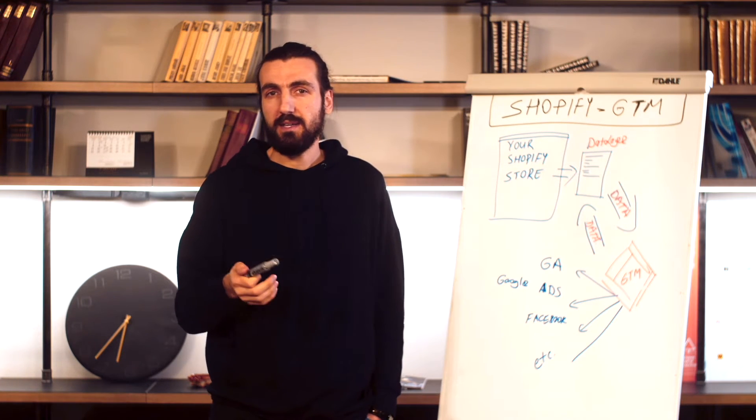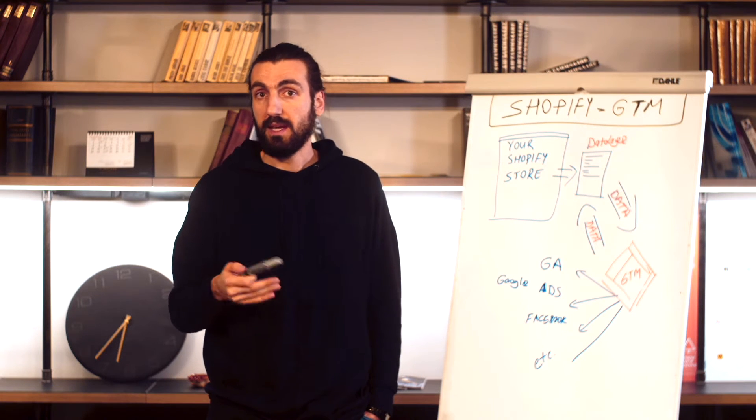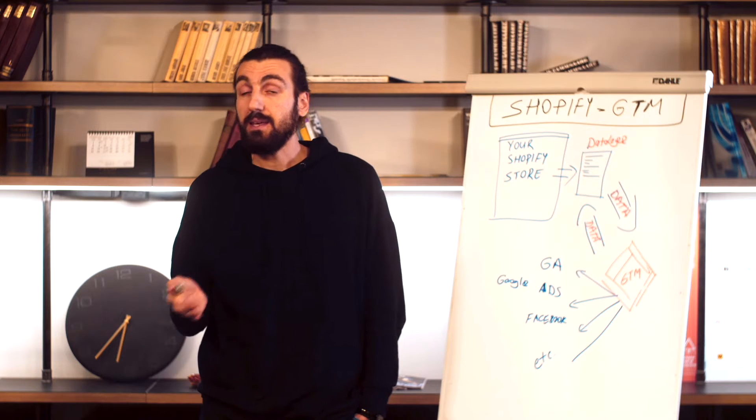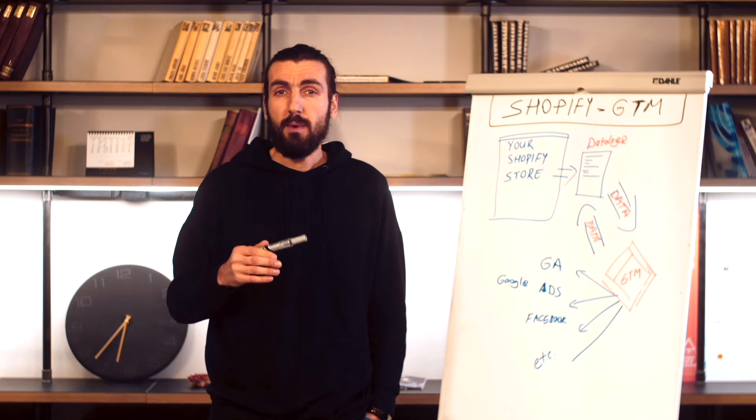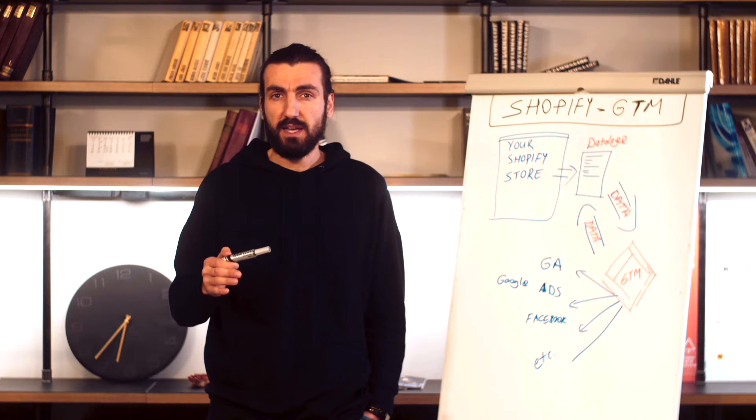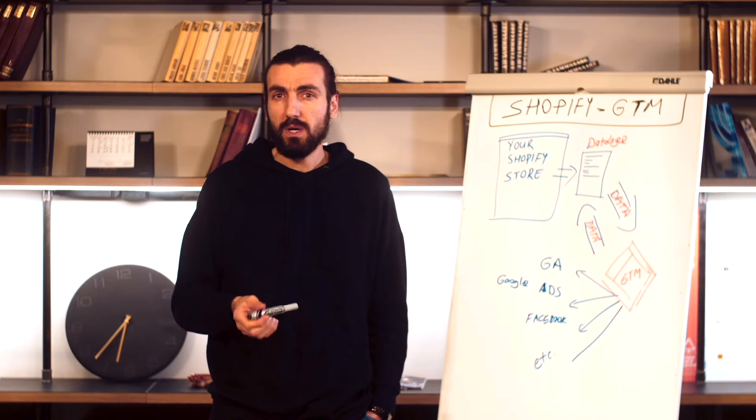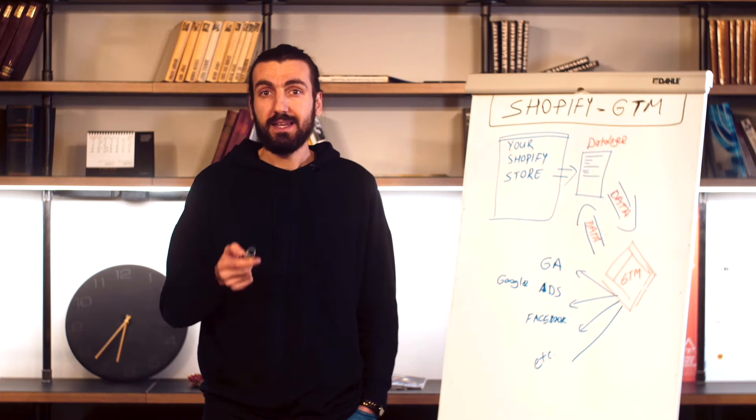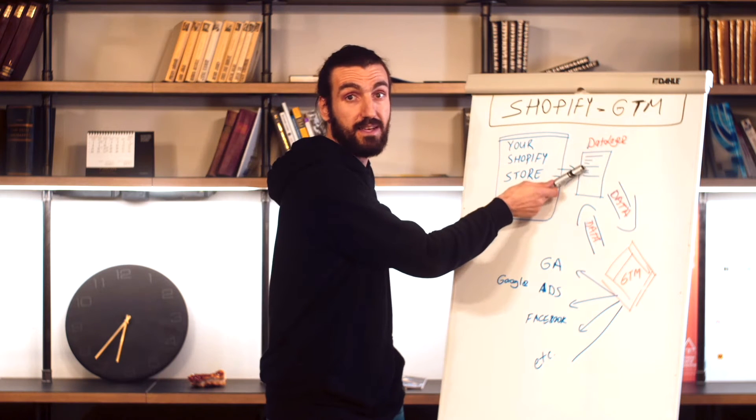What I mean here by data is, for instance, if it's a product page, the product's name, the category, the product's ID, if there's a variant, variant ID and so on. All of them are important pieces of data that third parties such as Facebook Pixel, Google Ads, and Google Analytics are interested in. That's why we need to access that data. And that is what a data layer does.